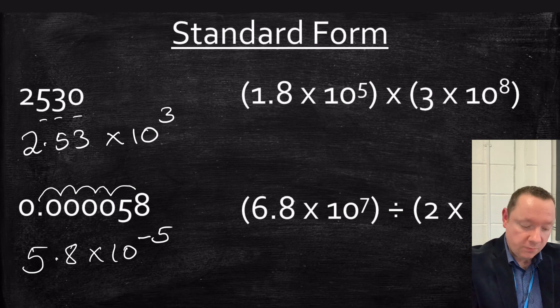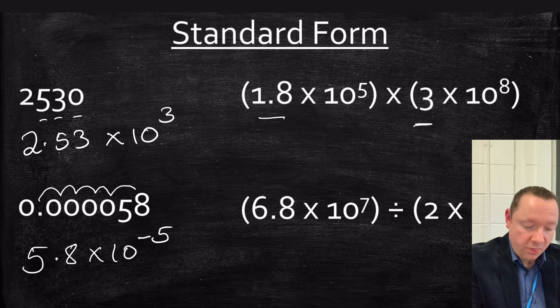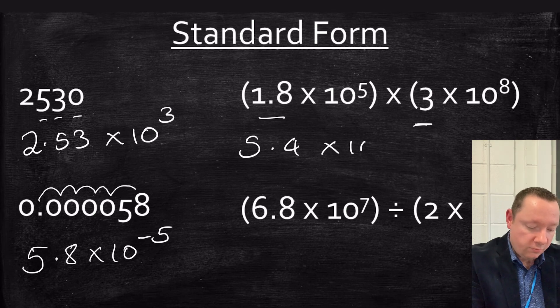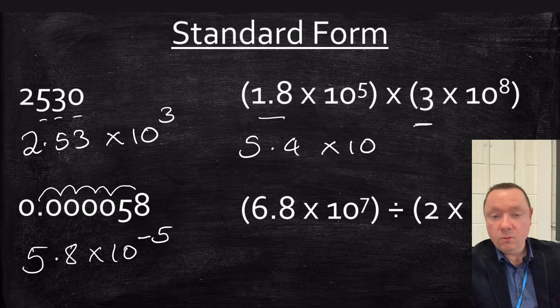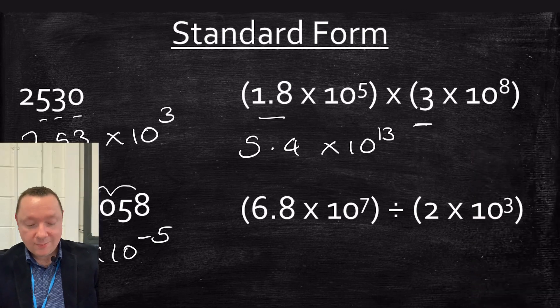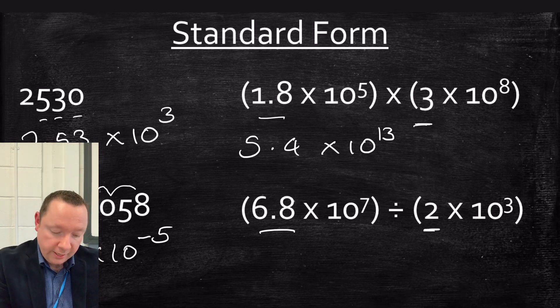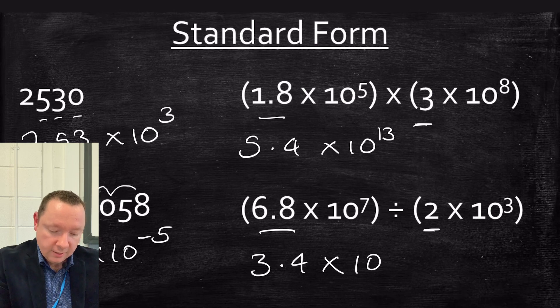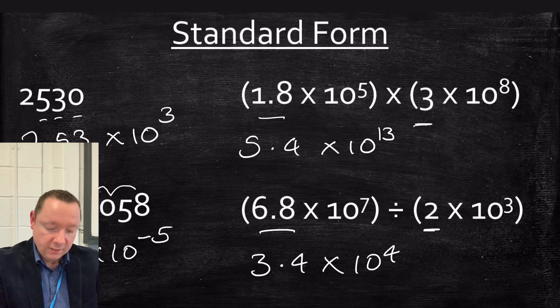We can do calculations with standard form. We'll come back to this later when we do laws of indices, but very briefly, for this sum, I do 1.8 times 3, so that gives me 5.4 times 10. And to get the power, well, with indices, if the base is the same, you just add the powers, so eight and five make 13. Division works in a similar way, so I divide the numbers, 6.8 divided by 2, that gives me 3.4 times 10, and then you take away the powers. 7 take away 3 is 4.